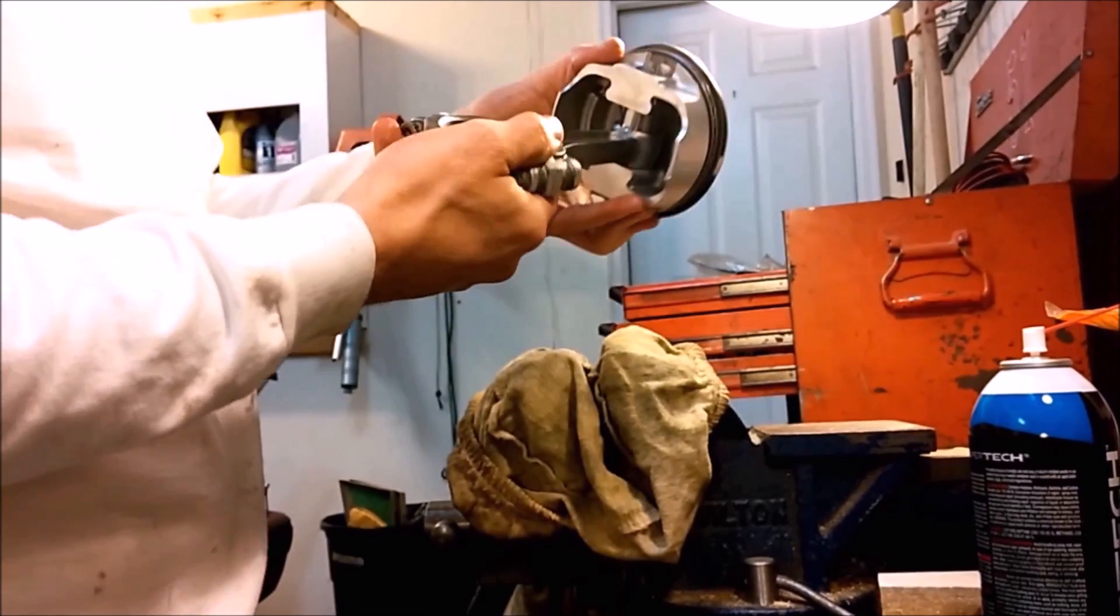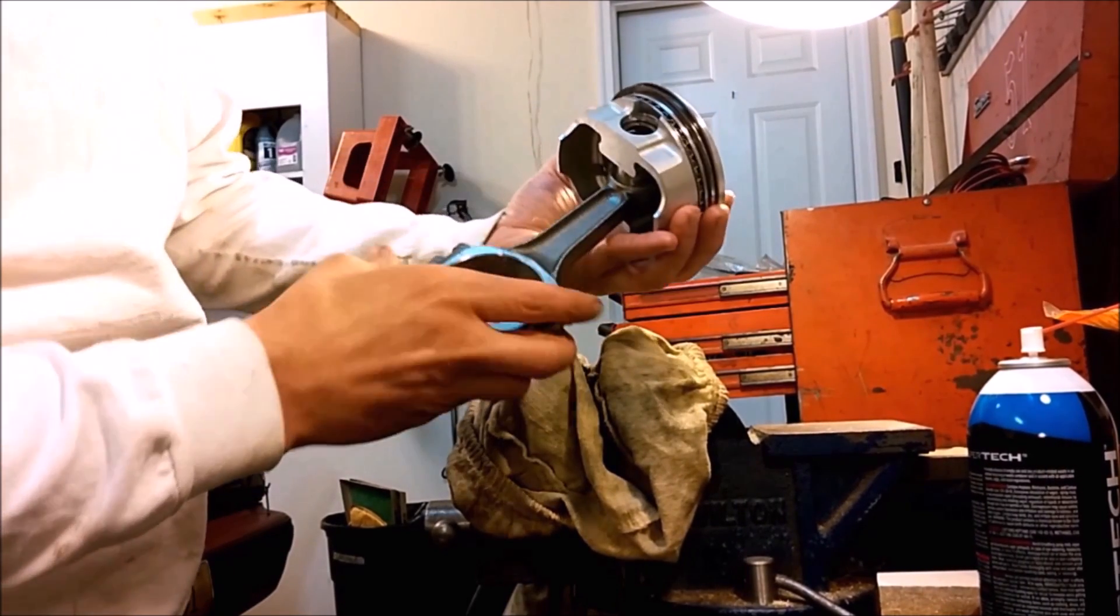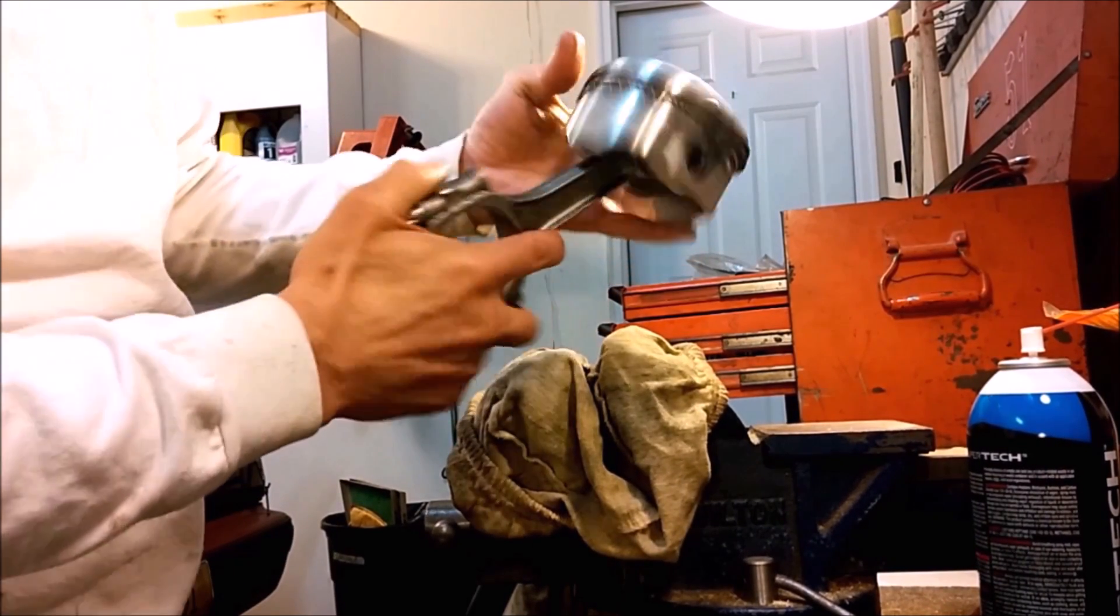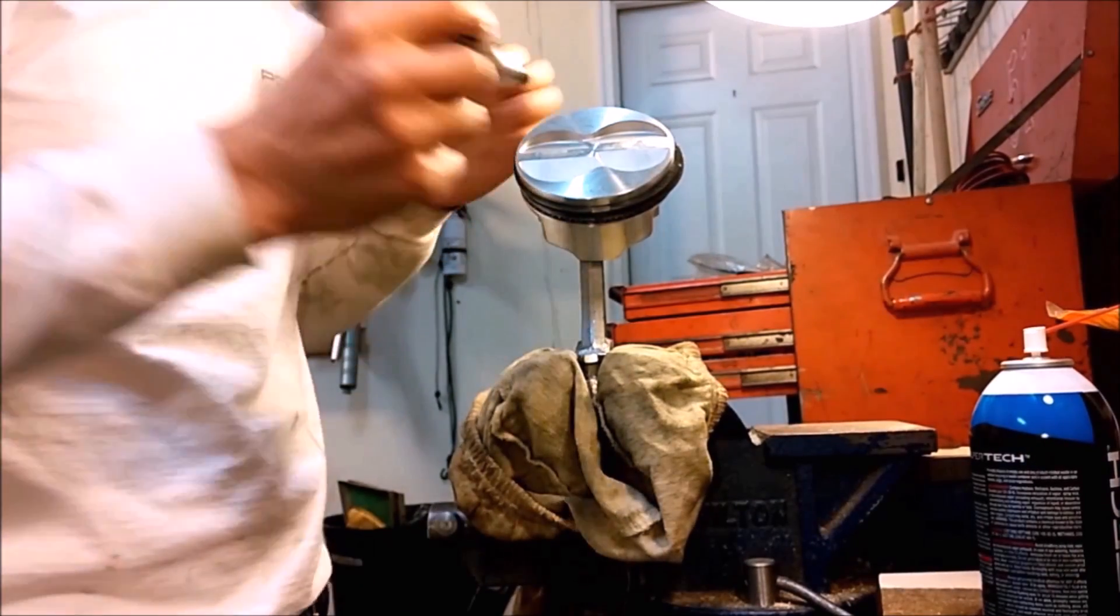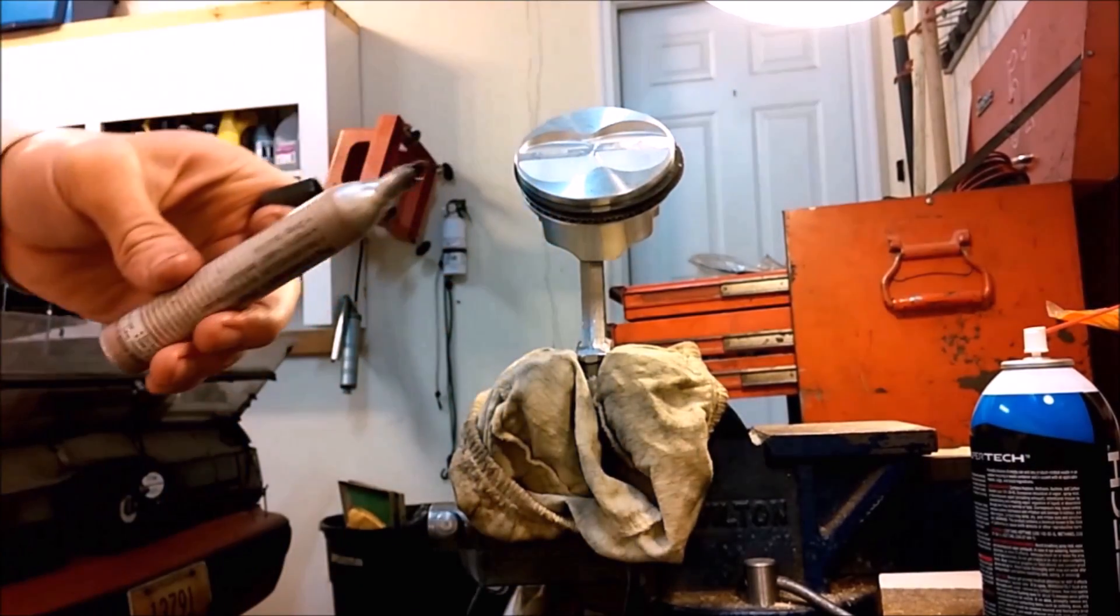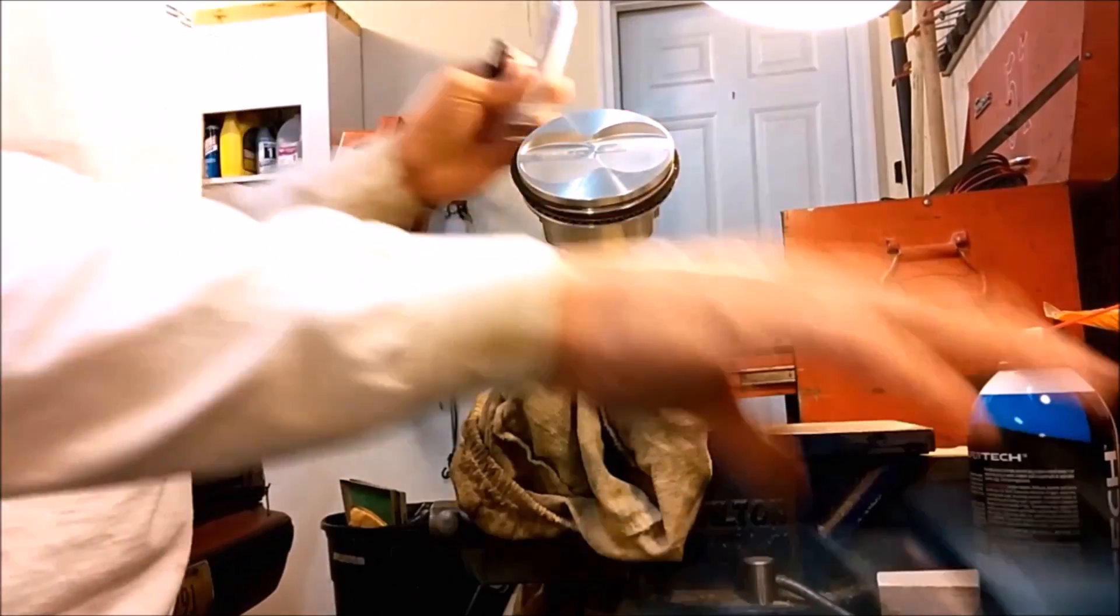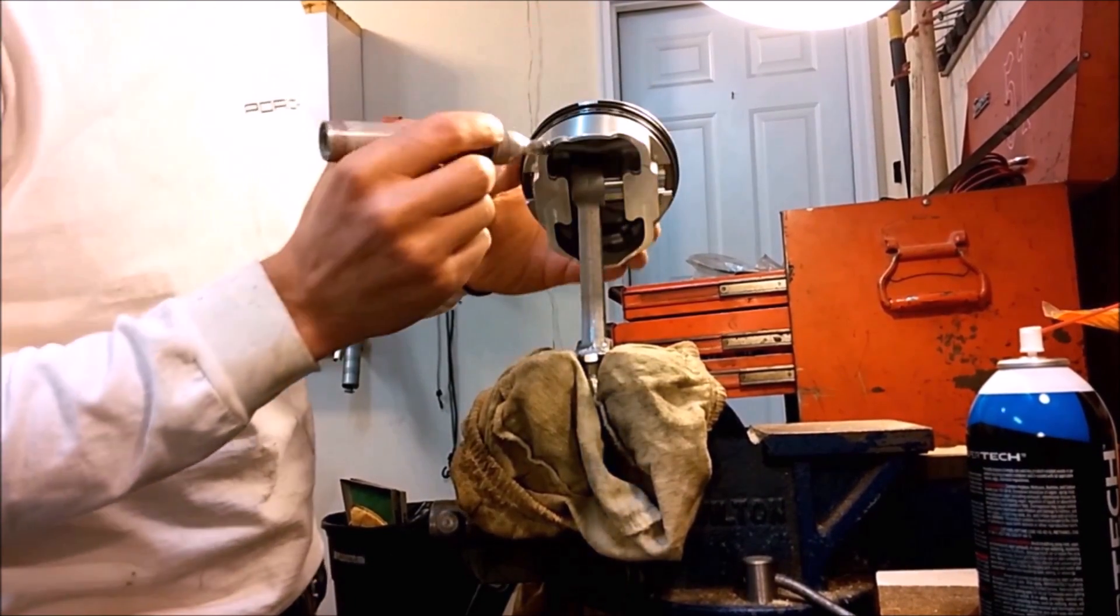And now we have a completed piston rod ring assembly. So we'll want to now mark—so this was, these rings were in cylinder six and this piston works best for cylinder six. So we can just mark on here six in a couple of places.